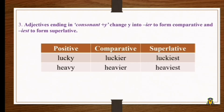The third instance: some adjectives end with a consonant followed by y. In that case, we change y to -ier to form the comparative degree, and to -iest to form the superlative. For example, 'lucky' — the ending is y, so it becomes 'luckier' in the comparative and 'luckiest' in the superlative. Similarly, 'heavy' becomes 'heavier' and 'heaviest.'